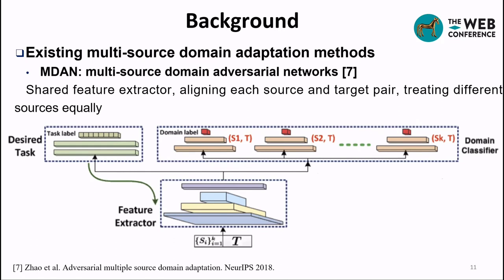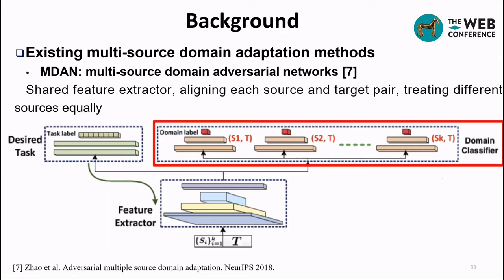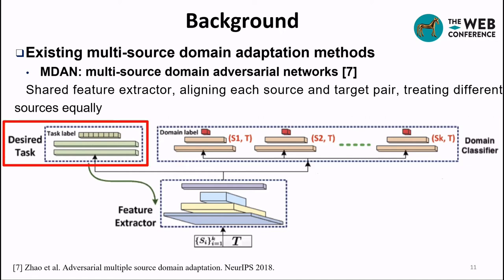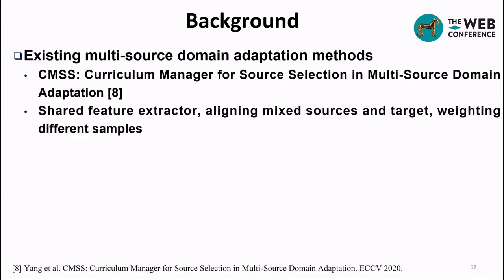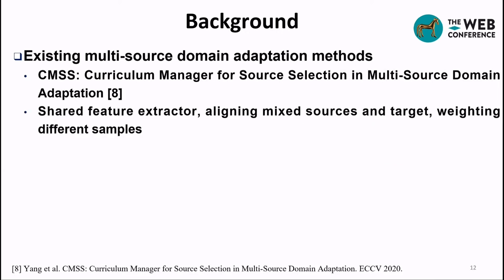Recently, several multi-source domain adaptation methods have been proposed. MDAN uses the same network to extract features for all source and target domains, aligns each source-target pair, and directly concatenates all extracted source features and labels into one domain, treating different sources equally. MSS also uses a shared feature extractor and aligns each source-target pair, but considers source importance by mixing data together and averaging the discrepancy loss with weights calculated by a curriculum manager.